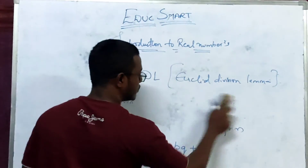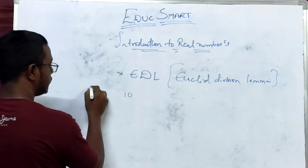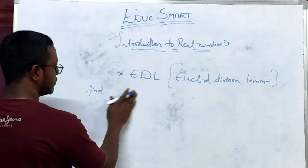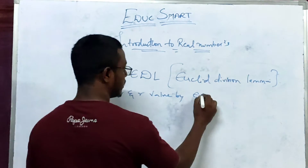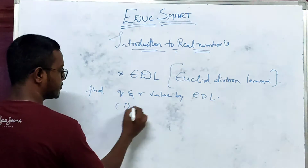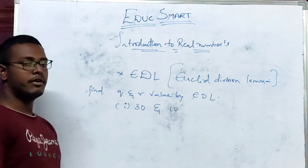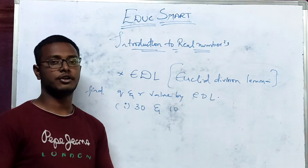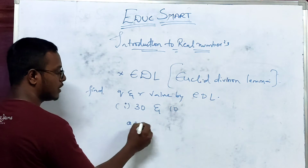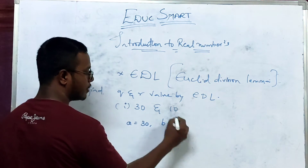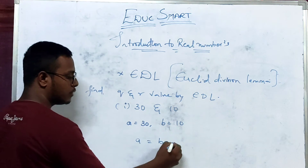We can find q and r values by EDL. For example, 30 is equal to 10. So always the larger of the a and b values should be considered as a, and the smaller one should be considered as b. So here a is 30 and b is 10.